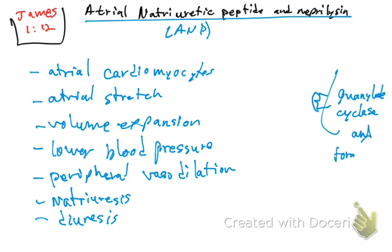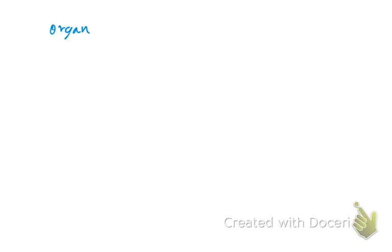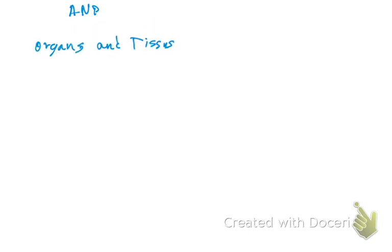Now, what are the organs or tissues that are going to be affected? Let's look at the organs and tissues that atrial natriuretic peptide is going to work on.